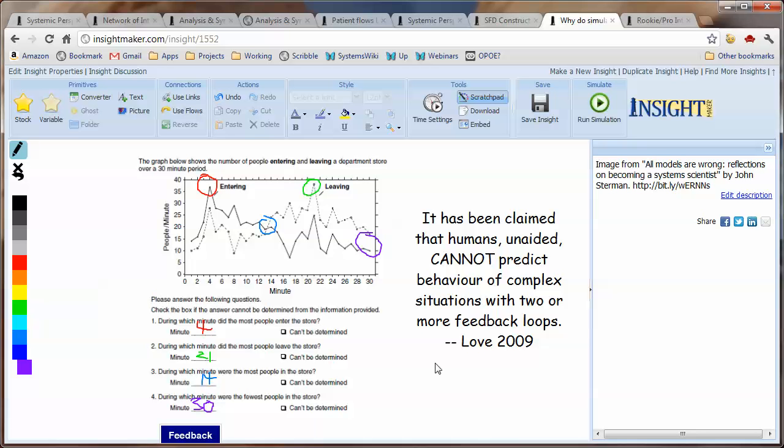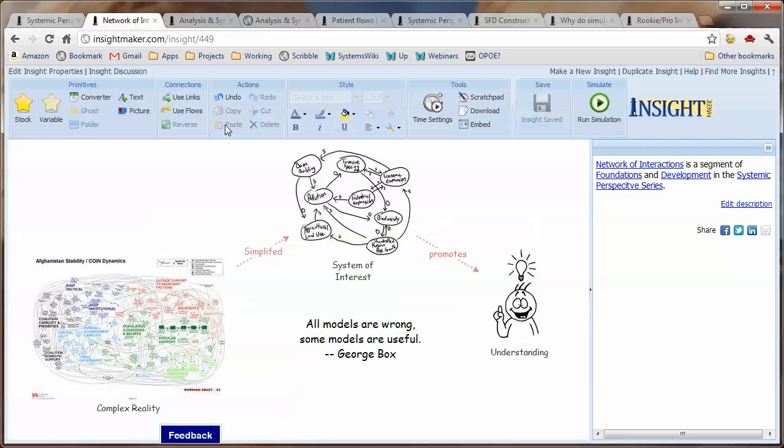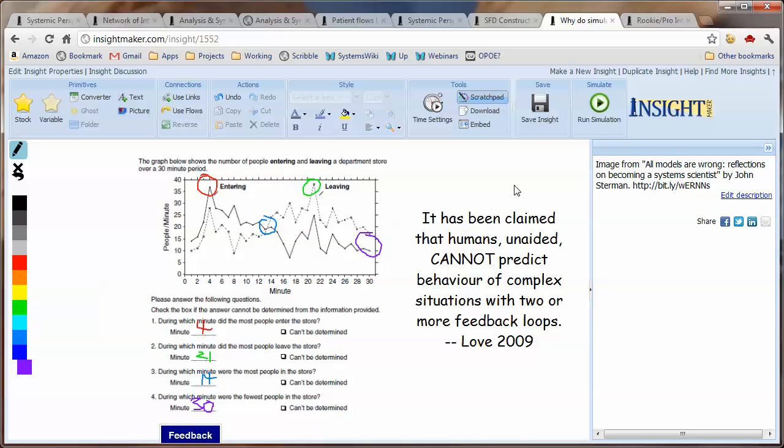These models that I provided to this point only have one feedback loop. There are situations where there are multiple feedback loops and attempting to simply intuit the implication of all of those interactions is pretty much beyond our capability.